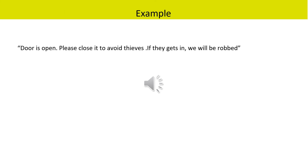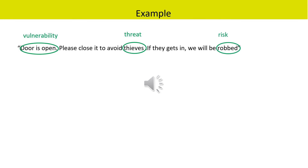Let us understand threat and vulnerability with examples. Consider the statement: the door is open, please close it to avoid thieves; if they get in, we will be robbed. Threat is an external factor that cannot be controlled and causes harm to the organization — so the threat in this statement is thieves. Vulnerability is the weakness of the organization — so the open door is the vulnerability. When a threat exploits a vulnerability, risk is raised. In this case, if the thief gets in through the open door, there is a risk of robbery.